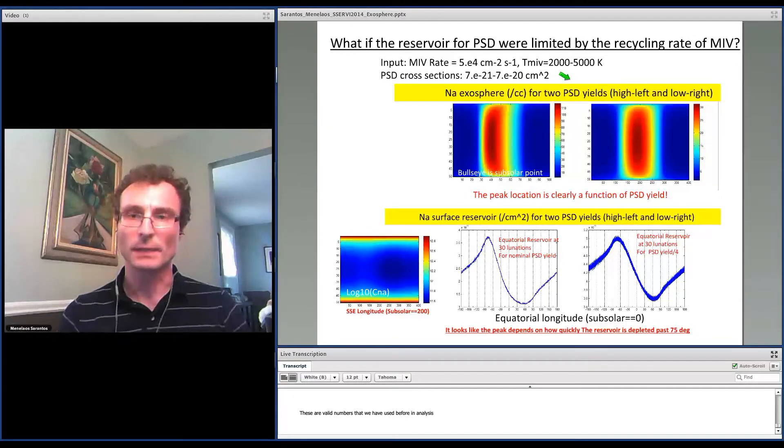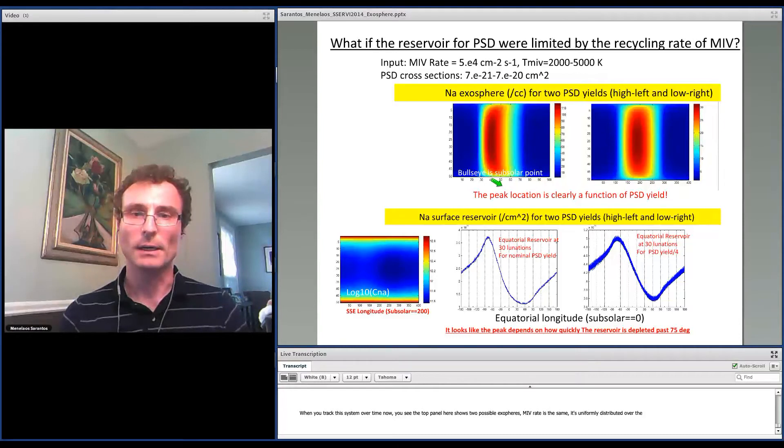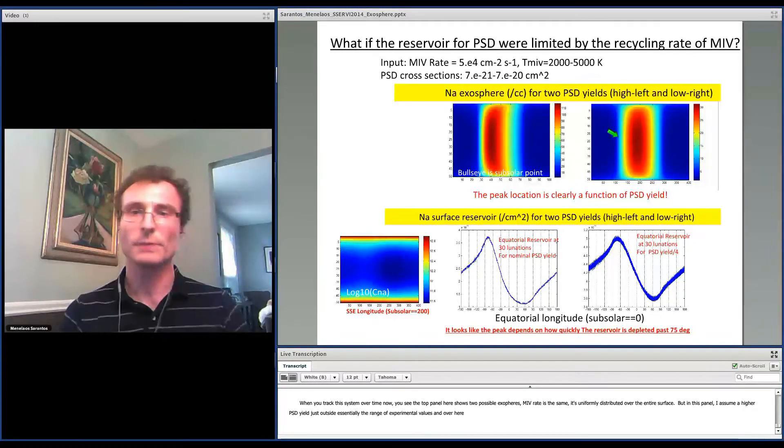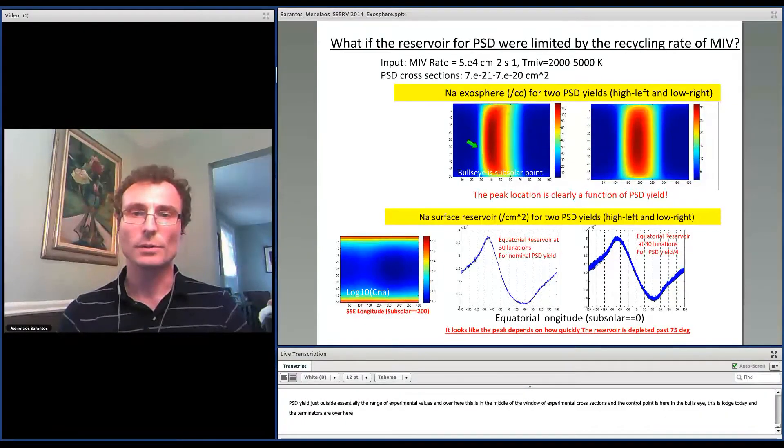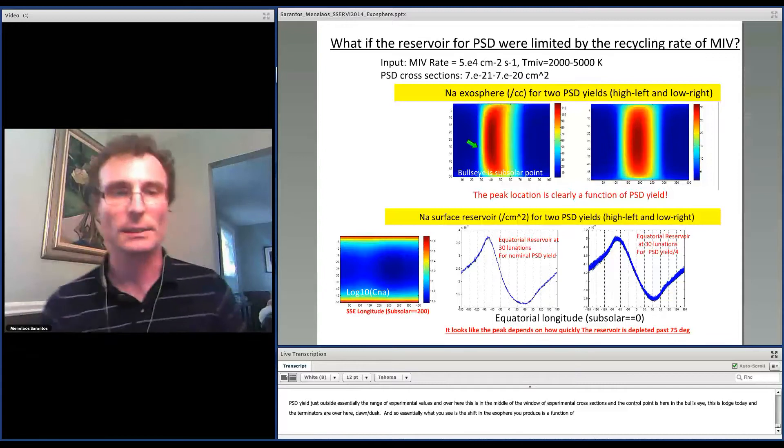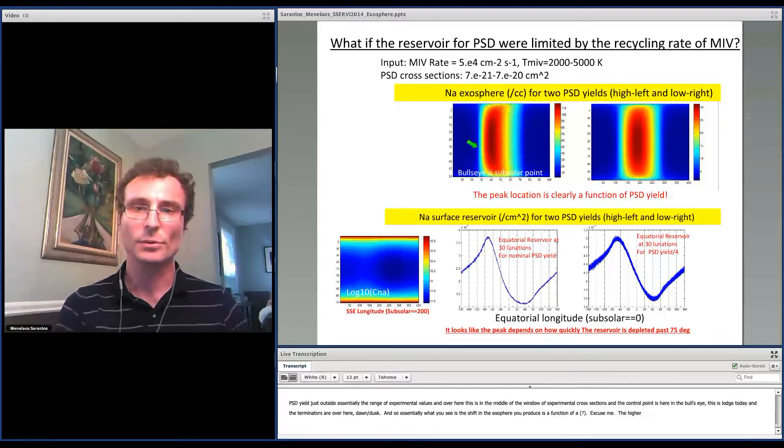When you track this system over time, you see the top panel here shows two possible exospheres. The MIV rate is the same, uniformly distributed over the entire surface. But in this panel, I assume a higher PSD yield which is just outside the range of experimental values. And over here, this is in the middle of the window of experimental cross-sections for PSD. And the subsolar point is here in the bullseye. Essentially, what you see is the shift in the exospheres you produce is a function of assumed PSD yield. Higher PSD yields tend to shift this emission towards dawn, and you more rapidly deplete the reservoir in that case.